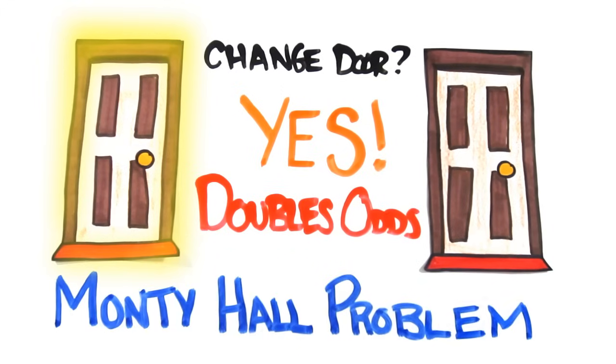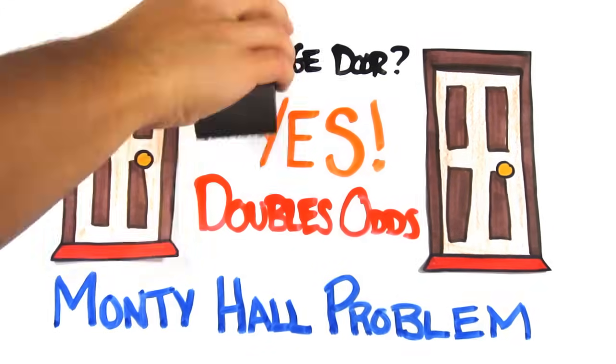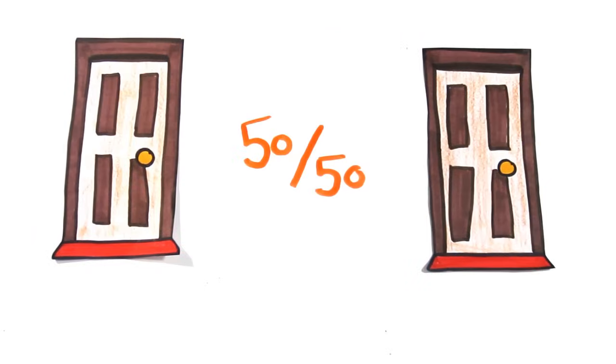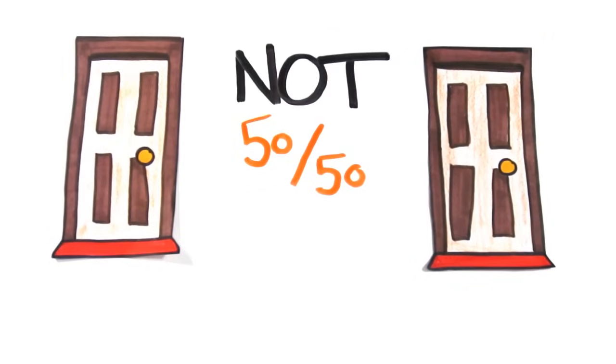This is the Monty Hall problem. At the start, most people correctly assume that you have a 1 in 3 chance of choosing the correct door. But it would be incorrect to assume that when one door is removed, each door now holds a 50-50 chance of having the car.